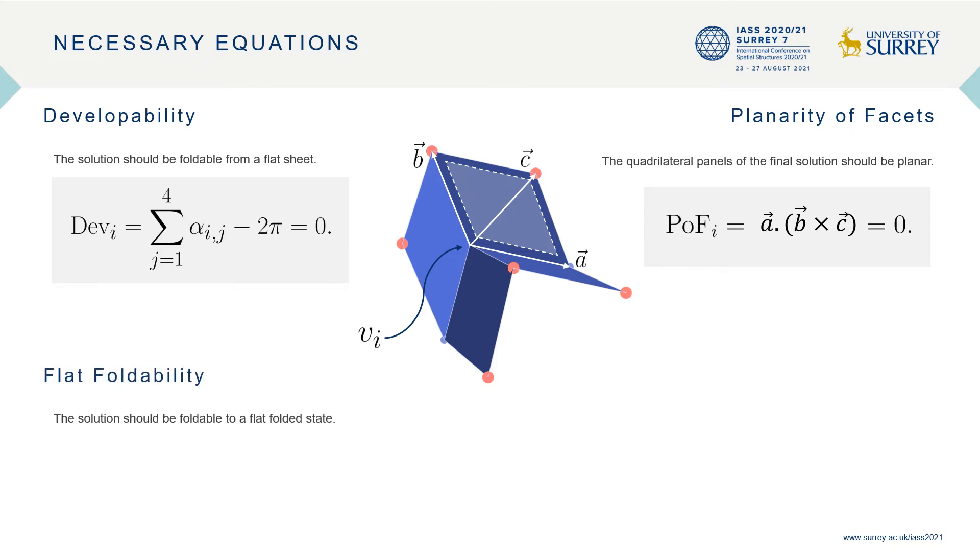The third set of constraints are related to local flat foldability. The equation for this can be written using Kawasaki-Justin theorem as follows.